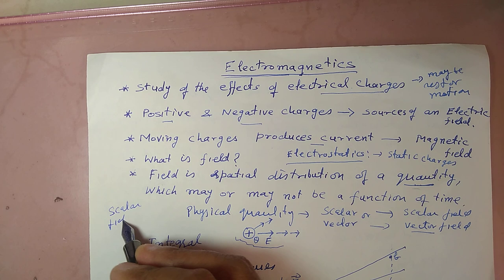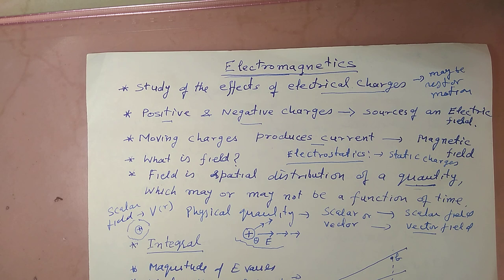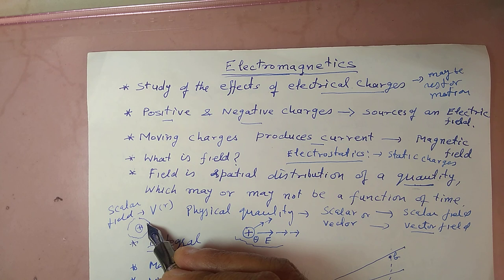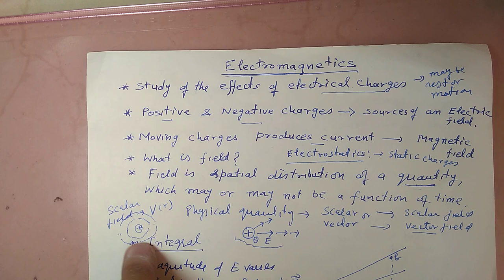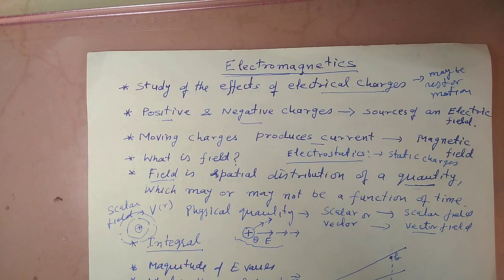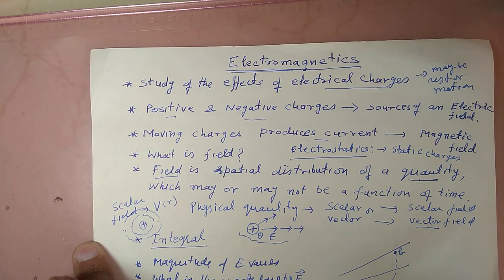For a scalar field, consider the electric potential, which is a function of position r. Around a charge, if I draw circles, at each point the potential has only magnitude because it is a scalar quantity. At each circle, we can represent equal-potential lines. In this manner we classify fields as either scalar or vector fields.